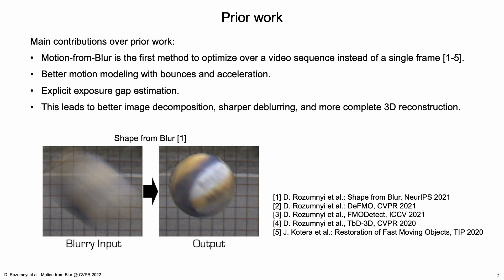Our main contributions over prior work is that Motion from Blur is the first method to optimize over a video sequence instead of a single frame.